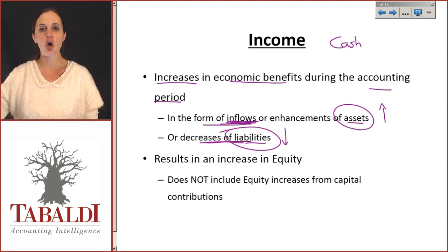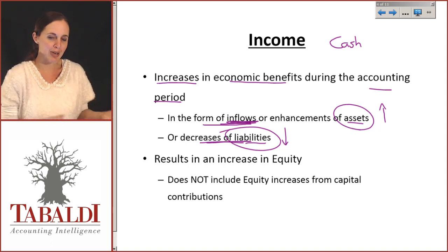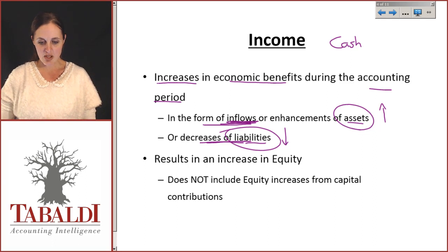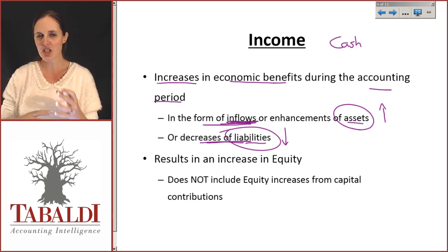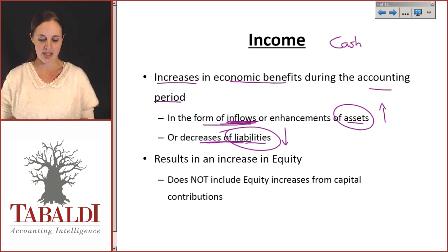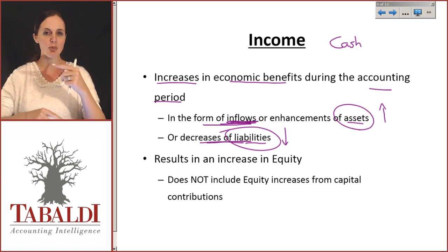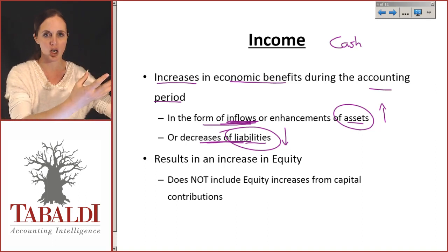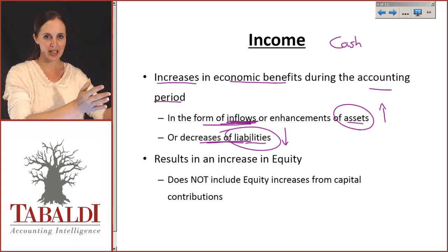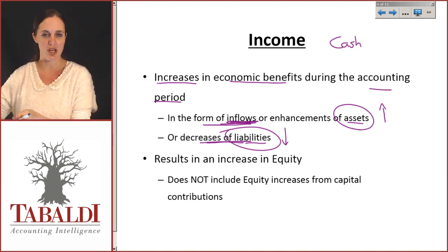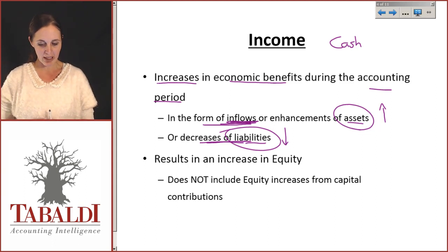Or consider decreases in liabilities. If you owed someone money last year and you owe them less money this year, how did that happen? How did you find the money to pay them? So the definition of income is not quite as simple as it seems. Instead of saying you sold something and got money for it, they're saying watch the movements in your assets and liabilities. If your assets are moving up or being enhanced, that's a good thing and what caused that is probably your income. Similarly, if your liabilities have decreased, that was possibly caused by income as well.